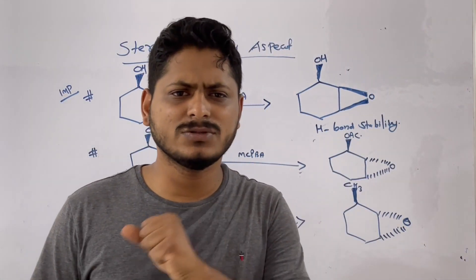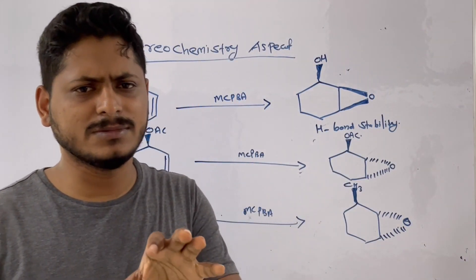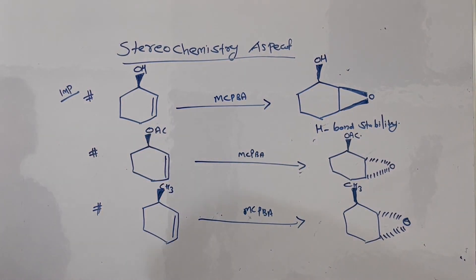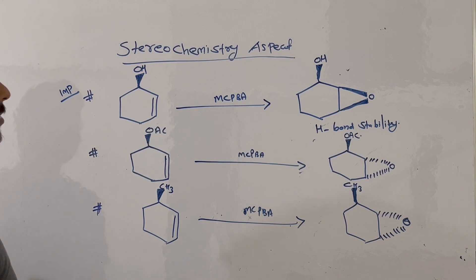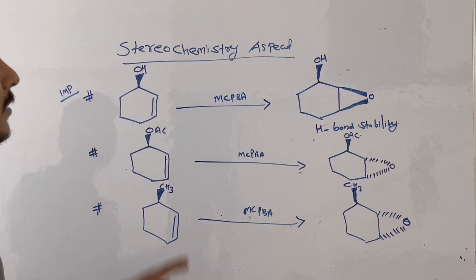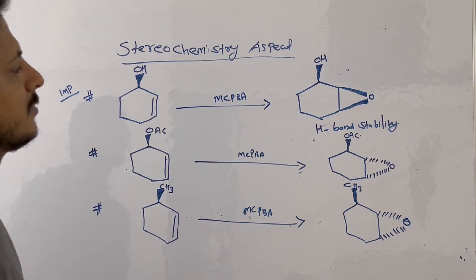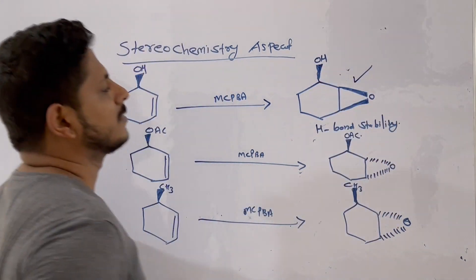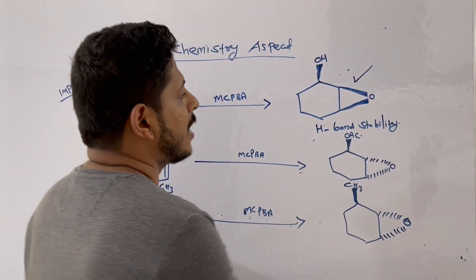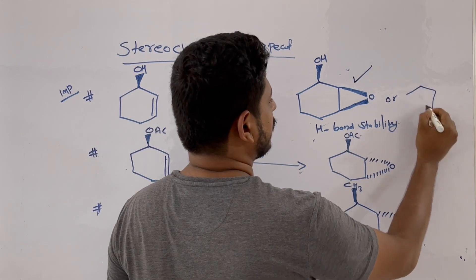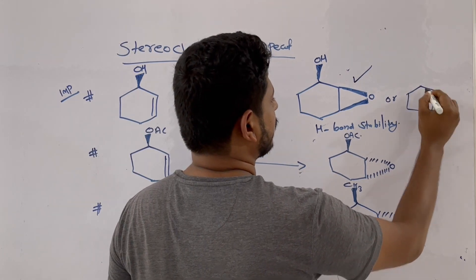Now let us discuss the stereochemistry aspect of the epoxidation reaction. In the first example, the substrate is treated with mCPBA. The product you get is the epoxide on one face. You can also get another product where the epoxide is on the opposite face, but predominantly we get a specific product.